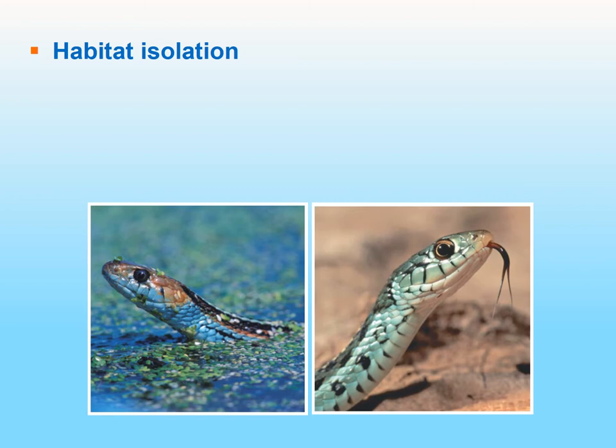Here's an example of habitat isolation. We have two species of snake — one aquatic and the other living on land. If one lives in water and one lives on land, they're really not going to run across each other. It's their preferred habitat that prevents them from mating — so this blocks the mating attempt.